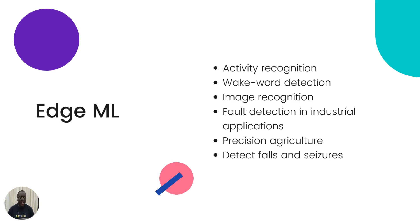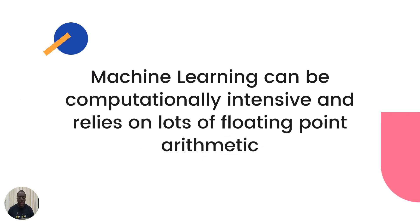There are many applications for edge ML. In industry, think of fault detection on factory lines or precision agriculture using networks of sensors. From a health perspective, consider fall detection for elderly people — the Apple Watch has such a feature. You can also think of people susceptible to seizures who live alone: how does a device detect a seizure and notify someone else?